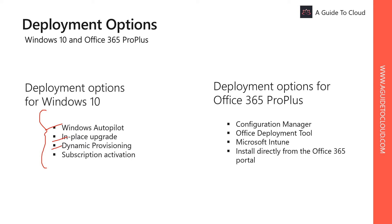Dynamic Provisioning lets you create a provisioning package to quickly configure one or more devices, even those without network connectivity. Subscription Activation lets you use a subscription to switch from one edition of Windows 10 to another — this is by far the easiest switch, for example from Windows 10 Pro to Windows 10 Enterprise Edition.